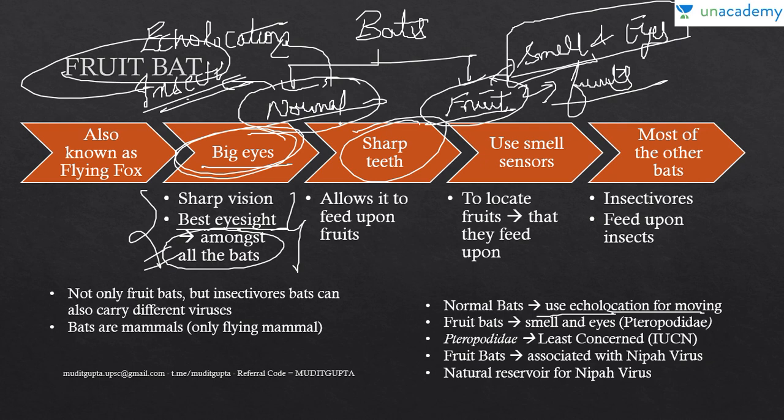The fruit bat uses smell and eyes, and they have sharp teeth because they eat fruits. So the fruit bat uses smell, eyes, and sharp teeth.